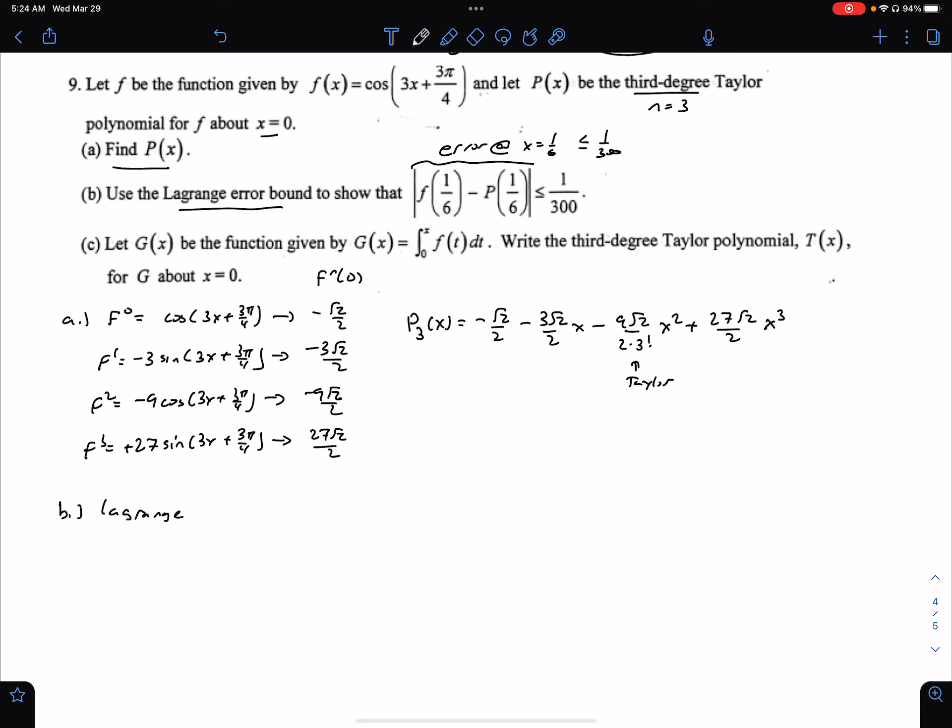Lagrange says that the error in the nth term is less than or equal to the maximum value of the next term. That's what this says. This is that max value of the next derivative over (n+1)! times |x - c|^(n+1).